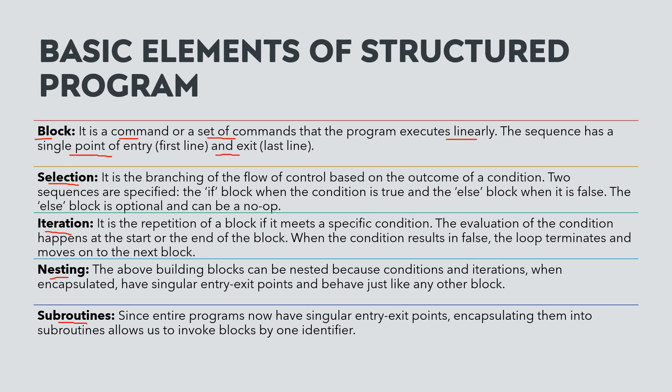Selection is when we use a condition or outcome to branch the flow of a program. Two sequences are specified: the if-block and the else-block. The if-block is executed when the condition is true, and the else-block is executed when the condition is false. The else-block is optional, but the if-block is mandatory.